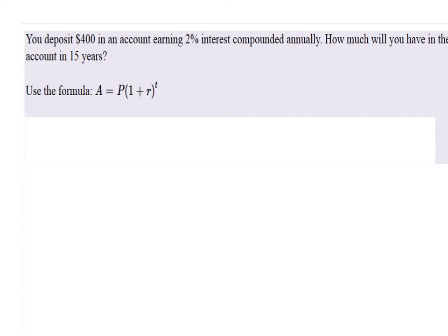You deposit $400 in an account earning 2% interest compounded annually. How much will you have in the account after 15 years? So we're going to use this basic compound interest formula.